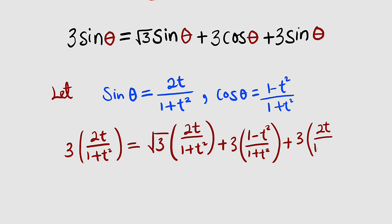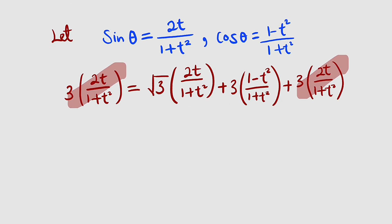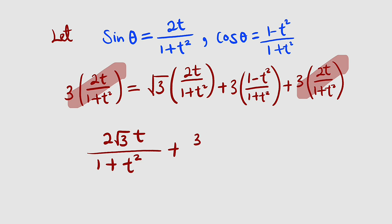You can see that the first term on the left and the last term on the right are exactly the same, so we can cancel them. Bringing remaining terms together and expanding, we have 2 root 3t divided by 1 plus t squared, plus 3 minus 3t squared divided by 1 plus t squared, all equal to 0. Since the denominators are the same, we can add the numerators.